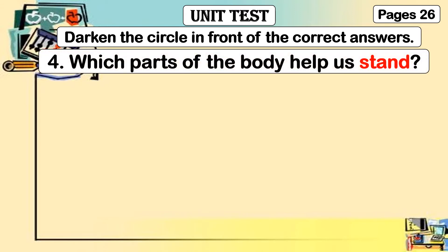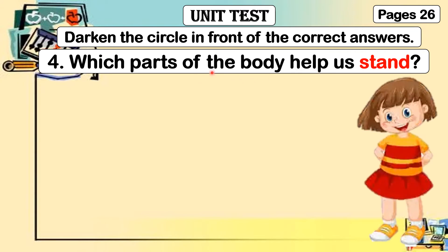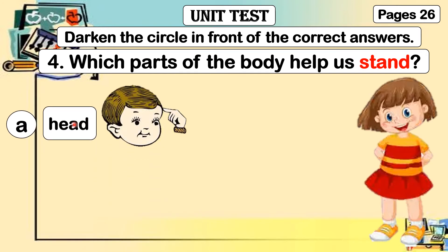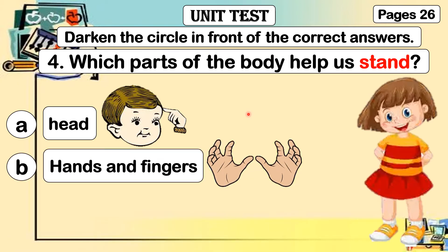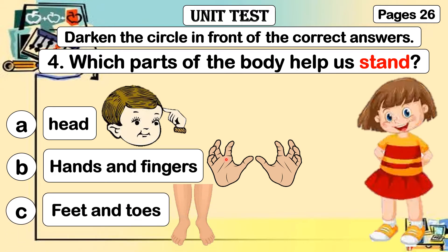Number four: which parts of the body help us stand? Letter A: head — do you use your head when standing? Letter B: hands and fingers — do you use your hands and fingers when standing? Or letter C: feet and toes.